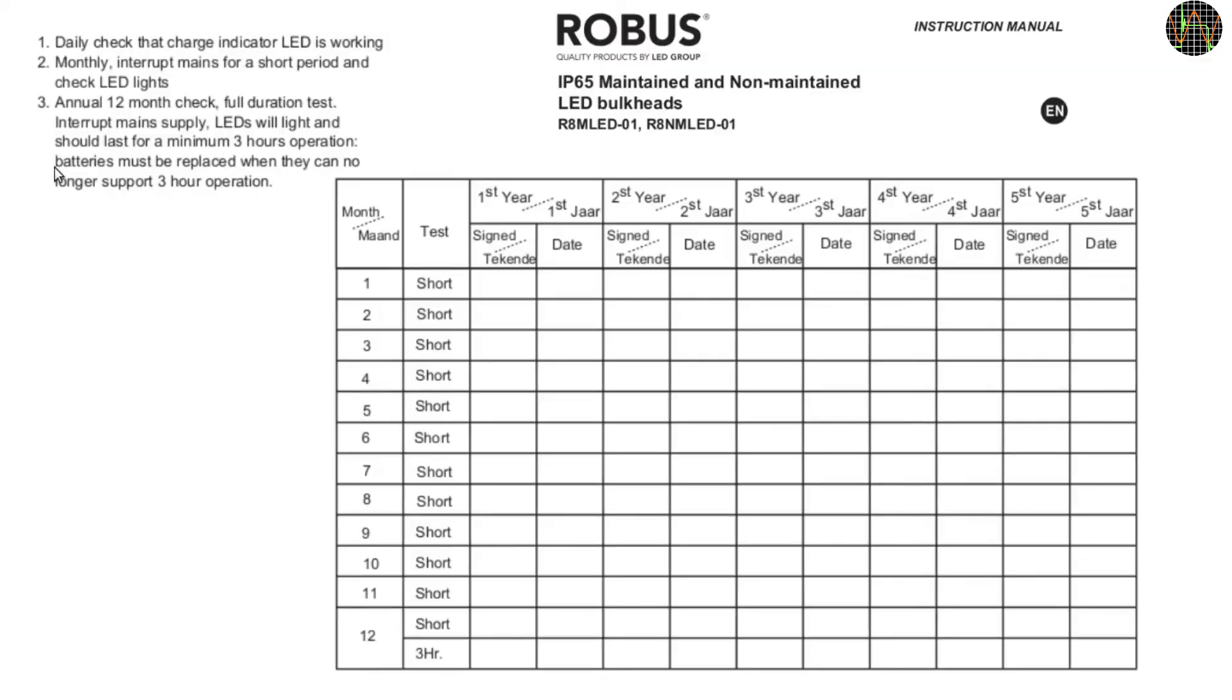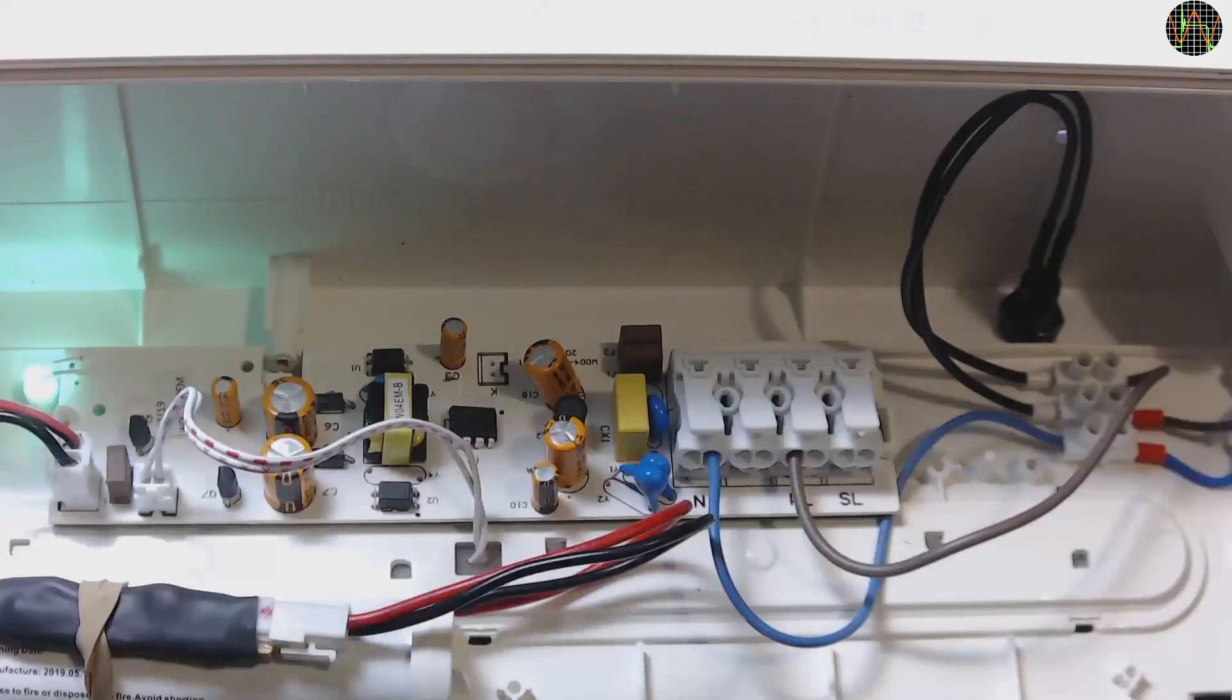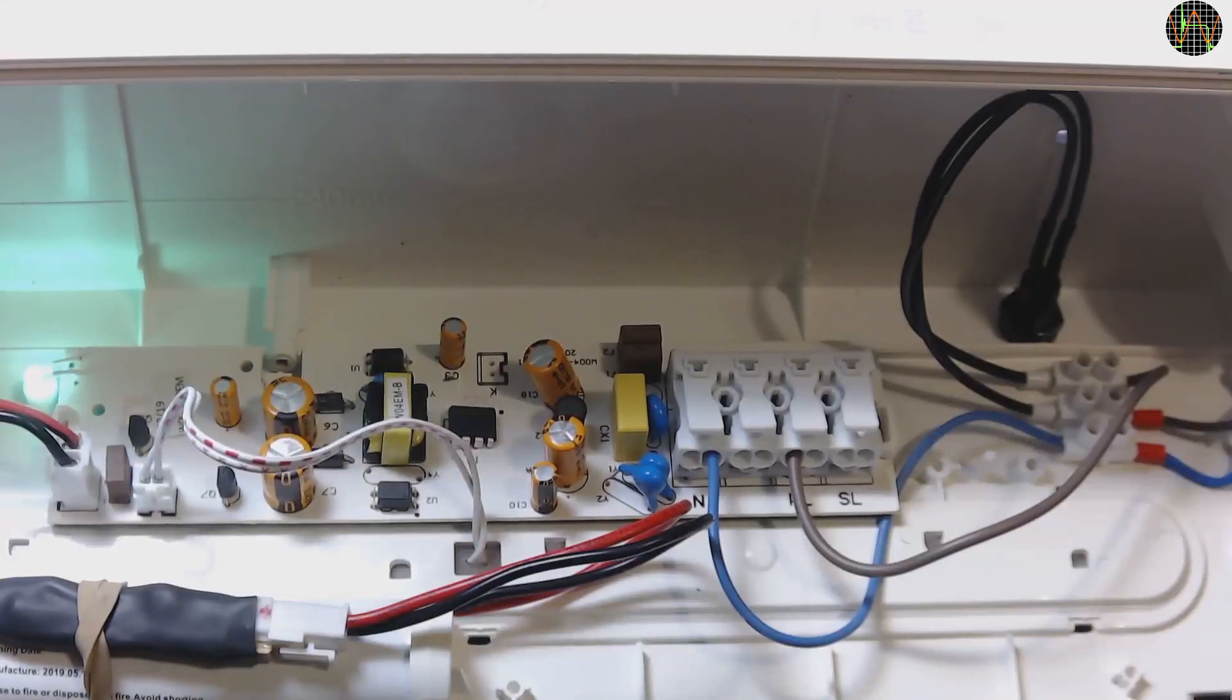The instructions for the light actually tell you to do a short functional test every month and a test to see if the battery can power the light for at least 3 hours every year. There is even a table in the instructions to record your tests. Apparently they expect you to trip the circuit breaker or have a switch somewhere to disconnect the emergency lights from the mains for testing. Well, this is a residential property and I can't just trip the circuit breaker because there is other stuff hanging on it.